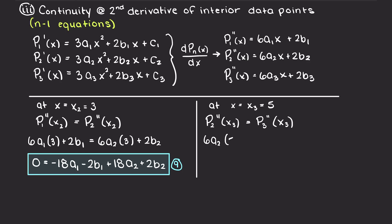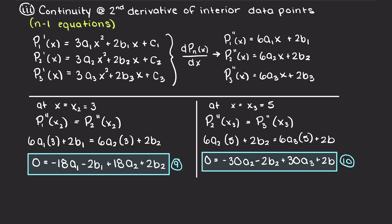Secondly, we will repeat this process for our second interior data point between P2 and P3. Therefore, we will again take the derivative of our first derivative, P2 and P3 functions we found earlier and evaluate them at x equals x3, which is 5. And again, just rearranging and putting everything to one side and it results in this equation.